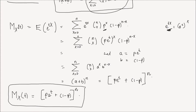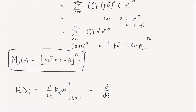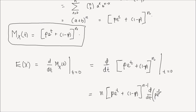Now that we have the MGF, finding the expectation is straightforward. The expected value of x, which is the first moment, is the first derivative with respect to t of the MGF evaluated at t equals 0. Taking that derivative using the power rule gives n times p times e to the power of t plus 1 minus p, to the power of n minus 1, times the derivative of the inside function, which is p times e to the t. All of this is evaluated at t equals 0.